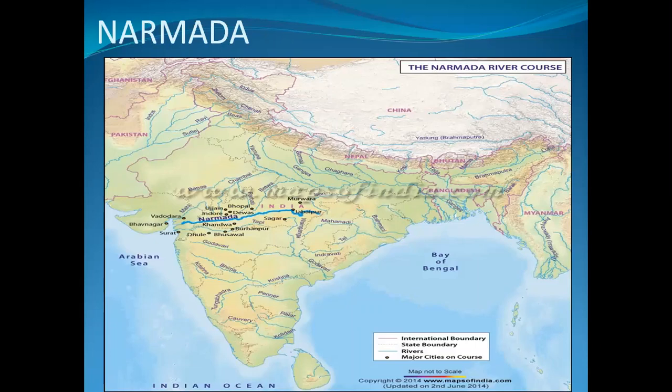These three rivers — Kaveri, Mahanadi, and Narmada — are seasonal rivers and are not of permanent nature. They depend on rainfall and are also called peninsular rivers or non-perennial rivers. Make sure to revise the portion covered in this video.